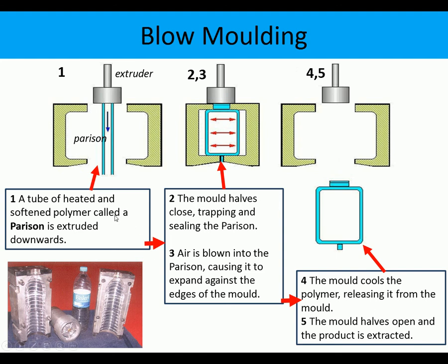Here's a description of blow moulding. A tube of heated and softened material called a parison is extruded downwards. The mould halves close together, trapping and sealing the parison. Air is blown into the mould and inflates it against the edges of the mould. The mould cools, the polymer is released from the mould, the mould halves open, and the product is extracted. So these are the three stages in blow moulding.